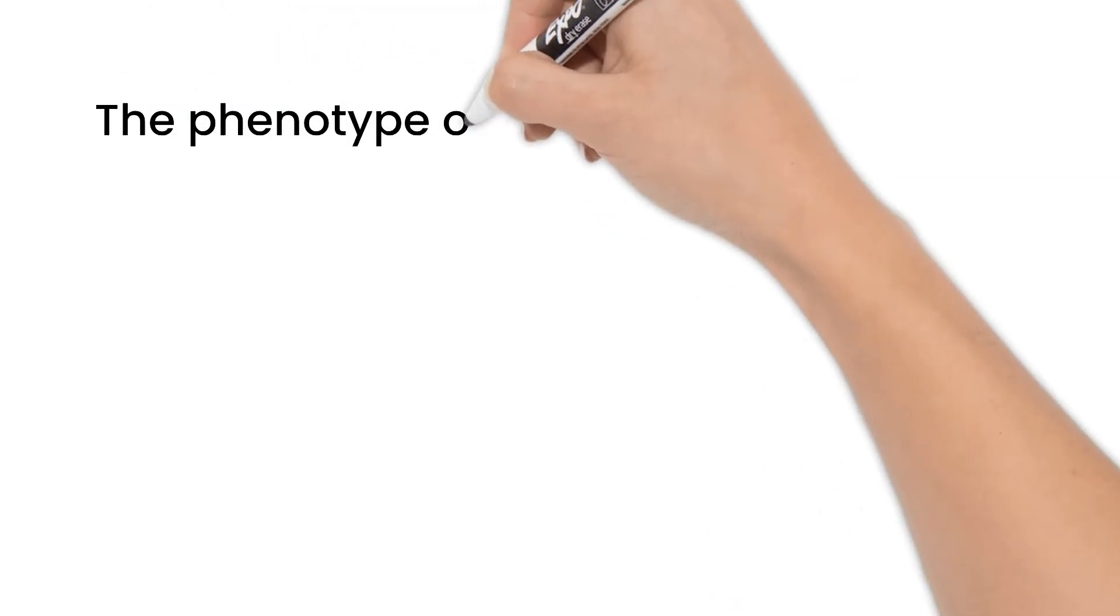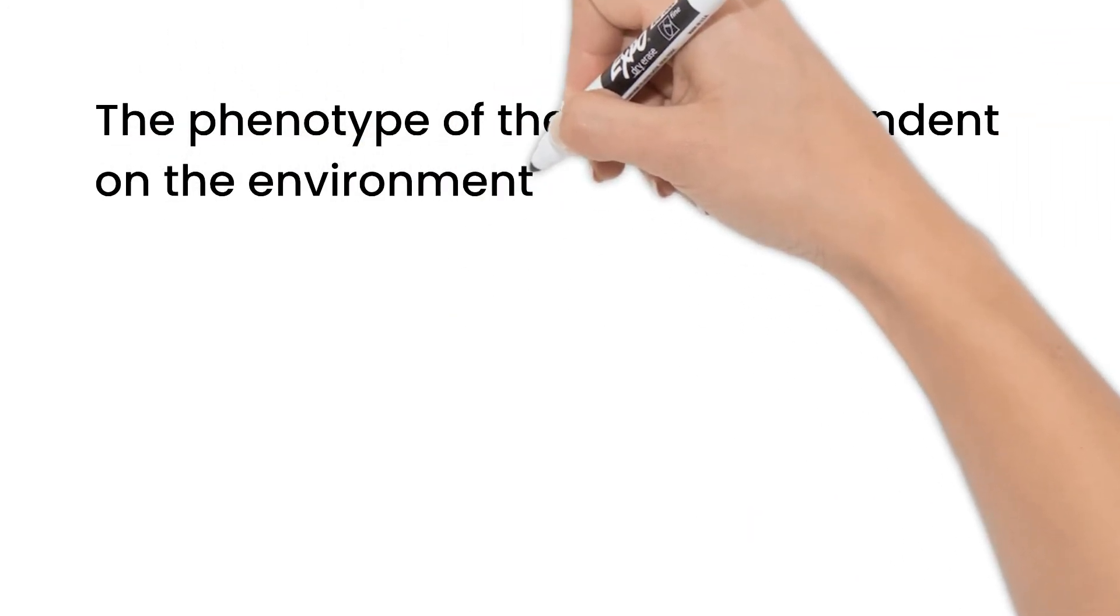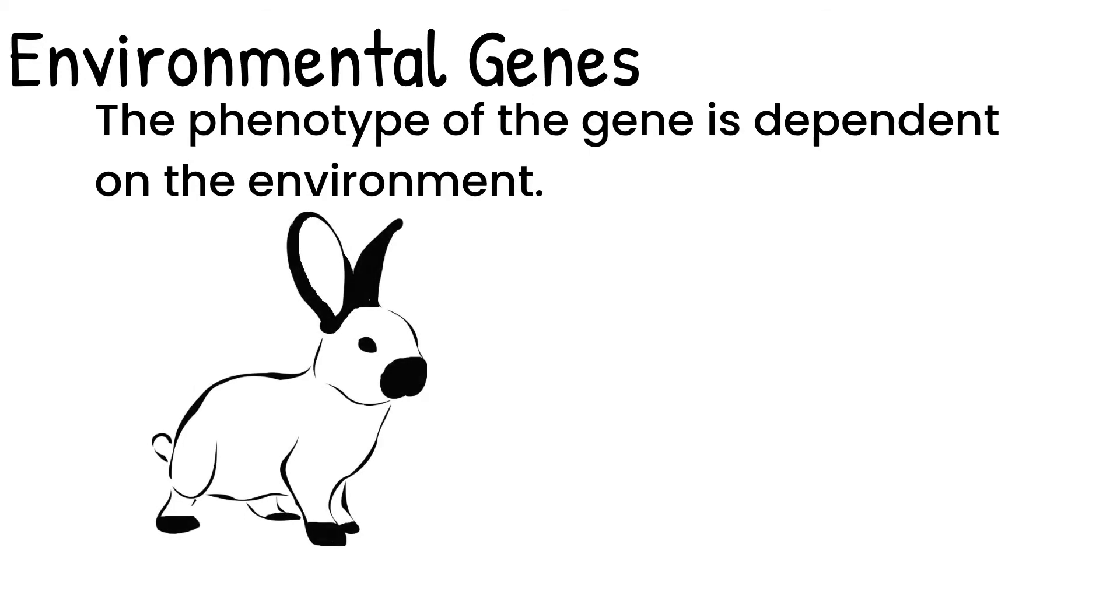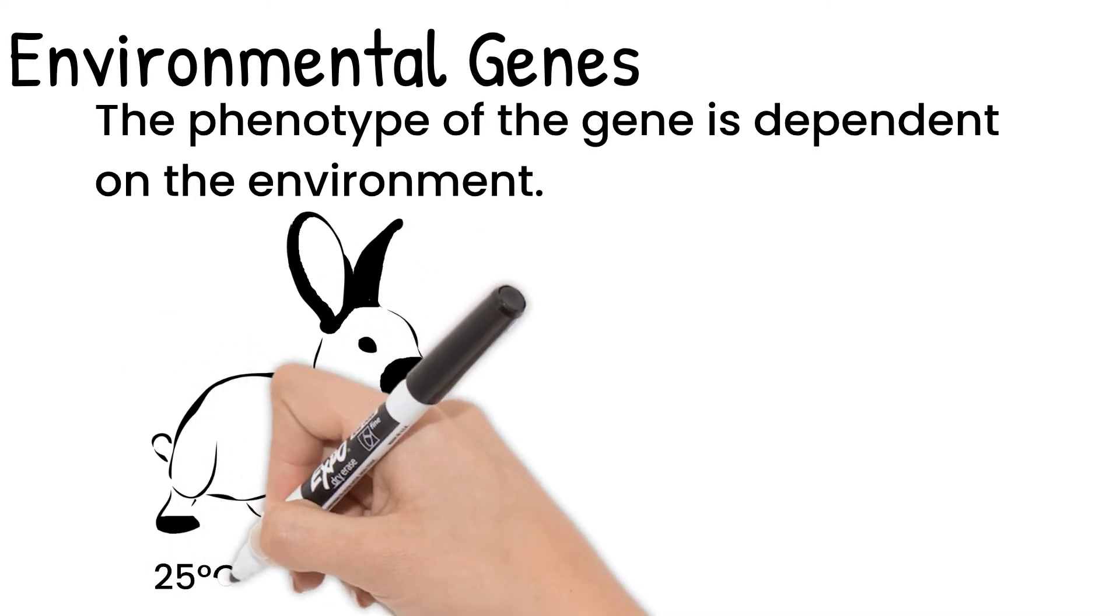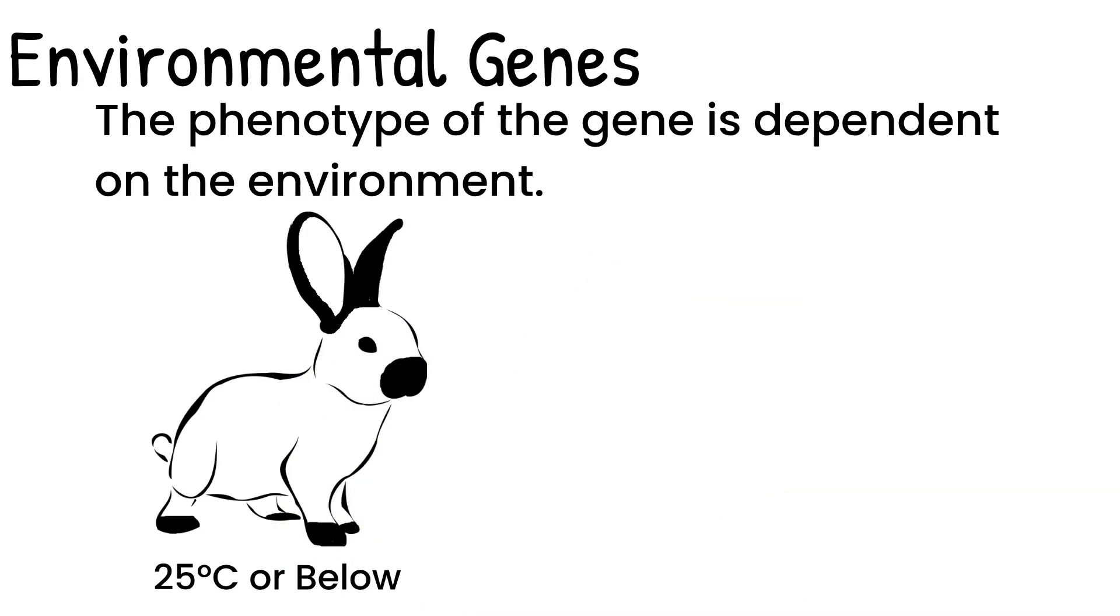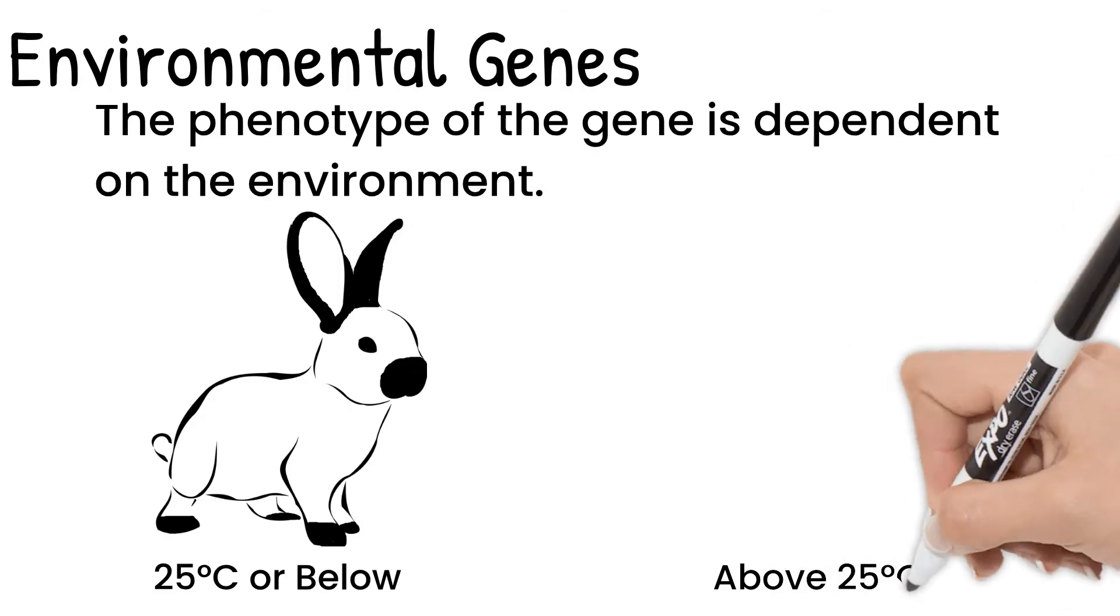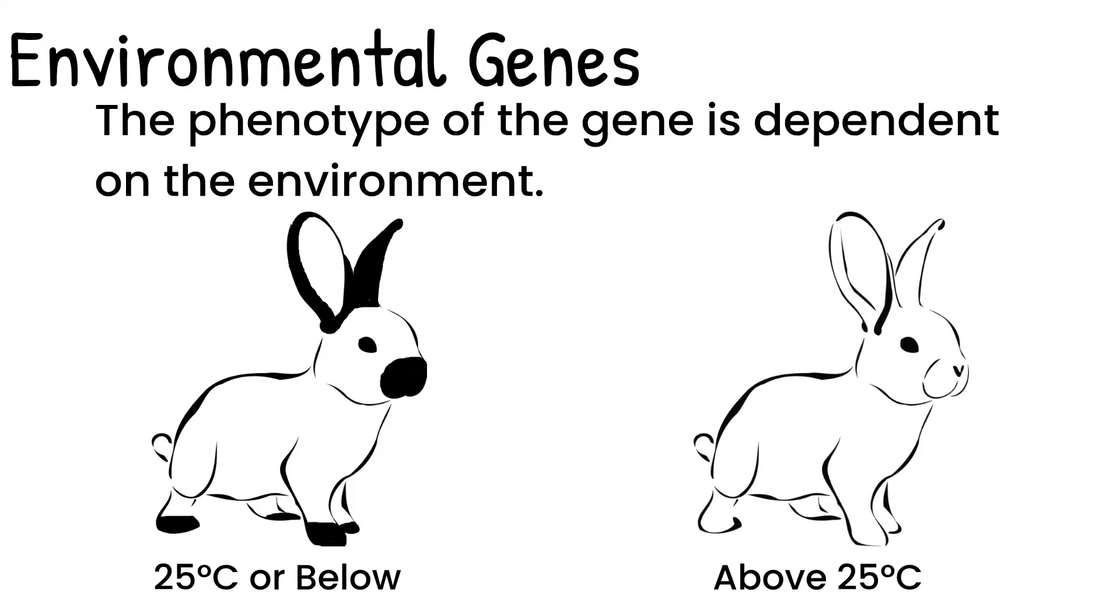Interestingly, the environment can have an effect on the phenotype of some genes. An example would be the Himalayan allele in some rabbits. This allele causes dark fur to grow on the rabbit's nose, ears, and feet. But this only happens if the rabbit is raised in a temperature of 25 degrees Celsius or colder. If the rabbit is raised in a warmer temperature, as little as a few degrees warmer, it does not grow these dark patches, even though it has the allele. The enzyme needed to make the dark pigment inactivates at higher temperatures. This is also why only the nose, ears, and feet are dark, as the rabbit's core body temperature is normally above 25 degrees Celsius. But their extremities can be colder.